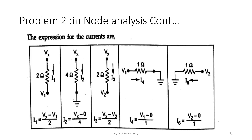The expressions for the currents are as follows. The value of I1 is equal to Vx minus V1 by 2. The value of I2 is equal to Vx minus V2 divided by 2. We determine the value of I4: I4 is equal to V1 minus 0 divided by 1. The value of I6 is equal to V2 minus 0 divided by 1.